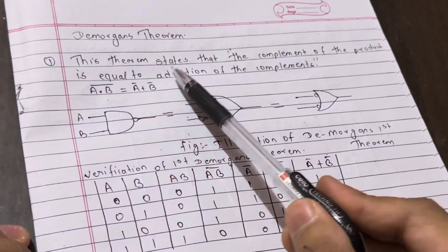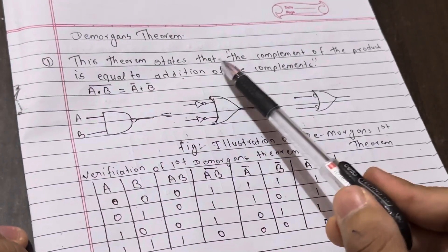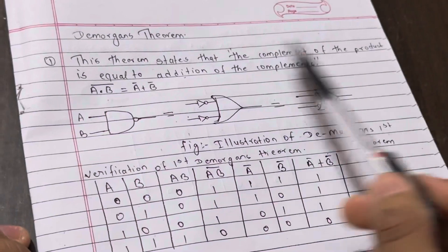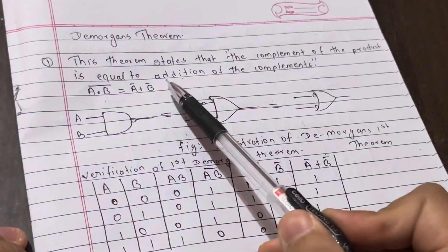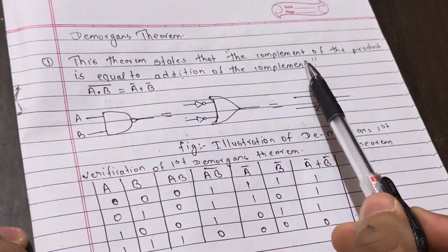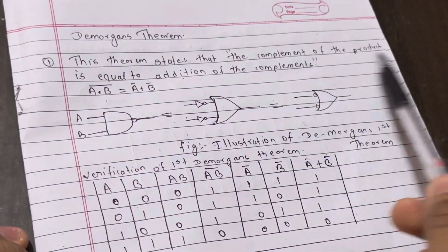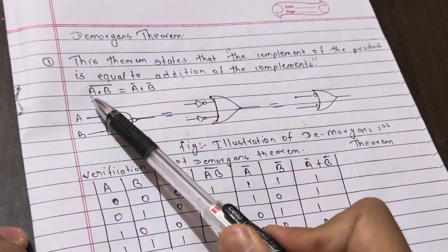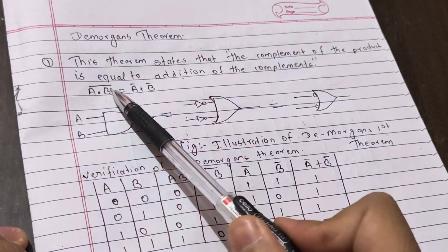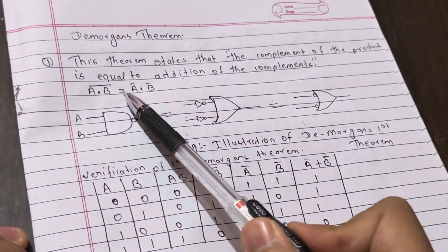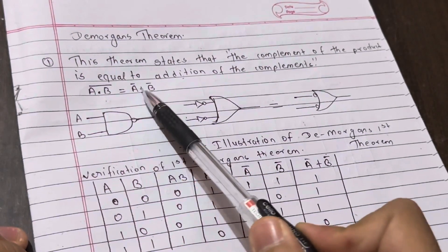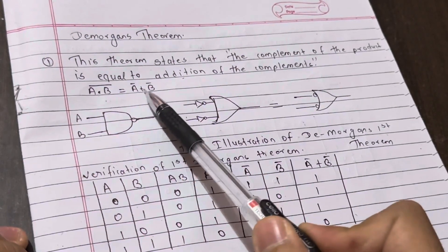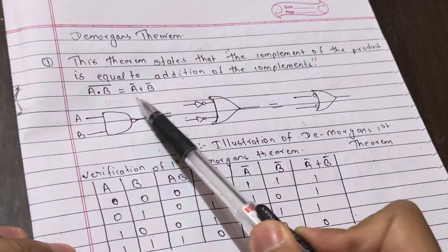This theorem states that the complement of the product is equal to the addition of the complements. What does this mean? The product complement is equal to the complement.